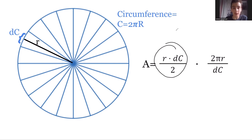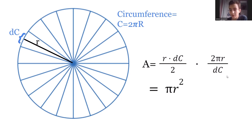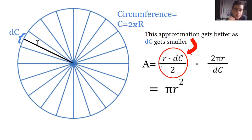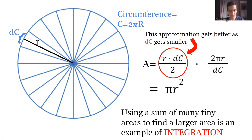This turns out to be π r² because the dc's cancel and the twos cancel, leaving r times π r, which is π r². The approximation for the area gets better as dc gets smaller. Using a sum of many tiny areas to find a larger area is an example of integration — this is something we will cover extensively in the course. Integration is the sum of many tiny areas, like the small sectors or triangles here used to find the larger area of a circle. This is the second major pillar of calculus.